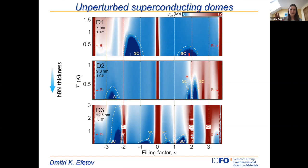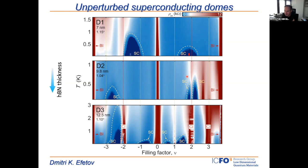Question: Would you see the same phase diagram in a different sample with the same HBN thickness and twist angle? Response: Hitting exact parameters is already pretty hard, but also what matters a lot is twist angle disorder, strain profiles, and percolation paths, since these superconductors are not homogeneous. That's why we observe Josephson junctions in devices that supposedly have none. The trilayer system may be more stable because the extra graphene layer somehow stabilizes these inhomogeneities.